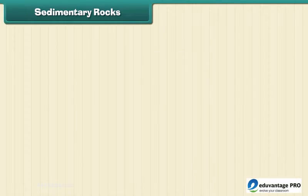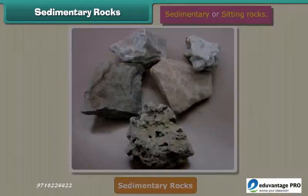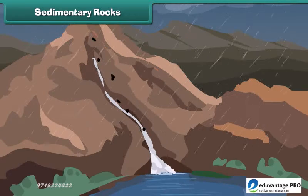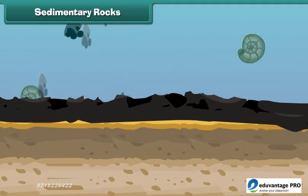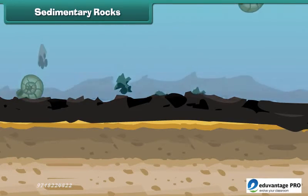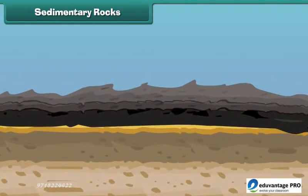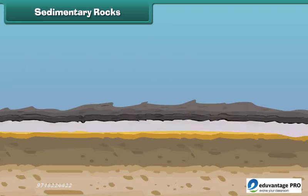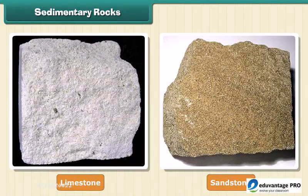The second type of rock is sedimentary rock. These are also called sitting rocks. Rocks roll down, crack, and hit each other. Then they are broken down into small particles. These smaller particles are called sediments. The sediments are transported and deposited by wind, water, etc. These loose sediments are compressed and hardened to form layers of rocks. These types of rocks are called sedimentary rocks. Limestone and sandstone are examples of sedimentary rock.